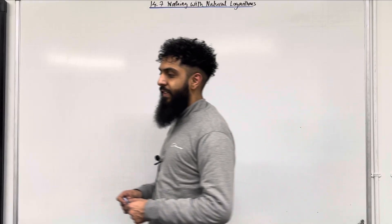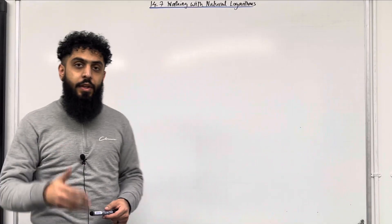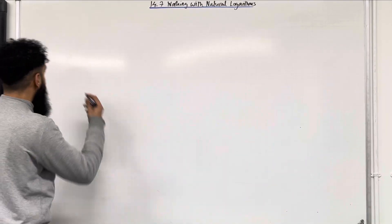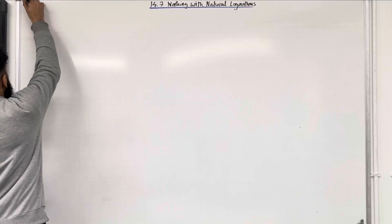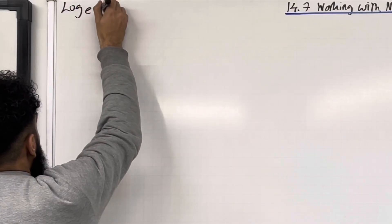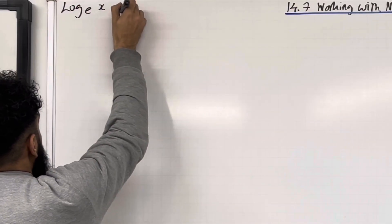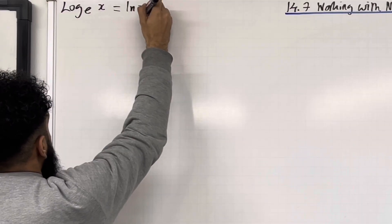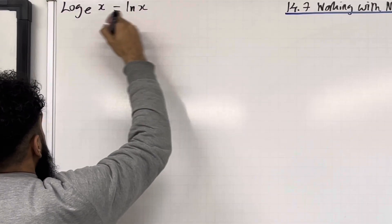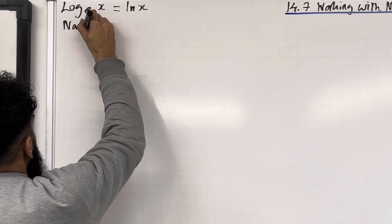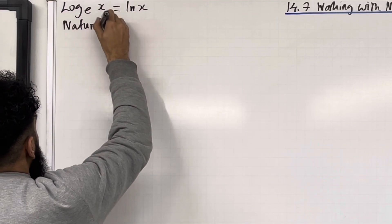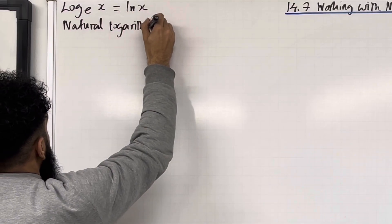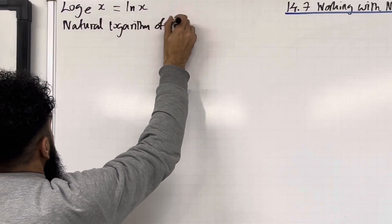Let's go through the key facts of this section, starting off with a very important logarithm. We have log base e of x, which can be rewritten as ln x. We call this the natural logarithm of x.